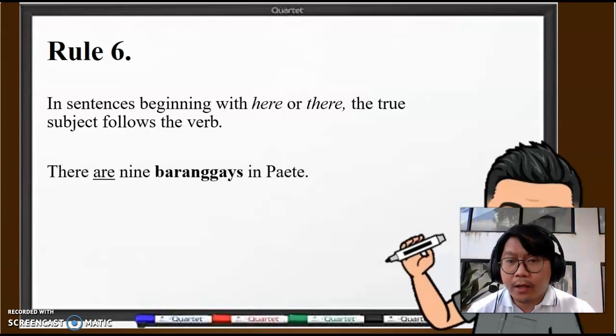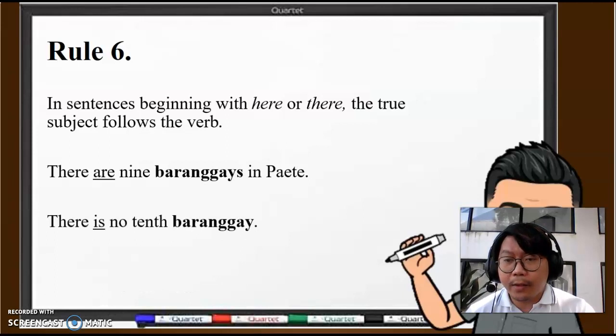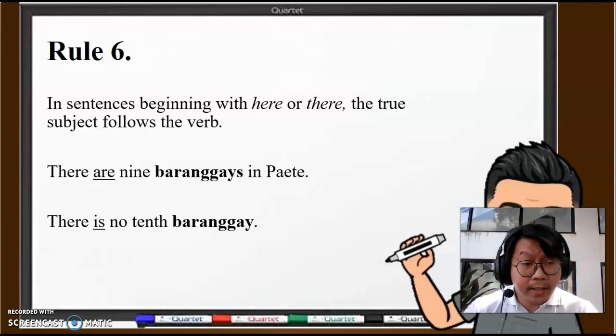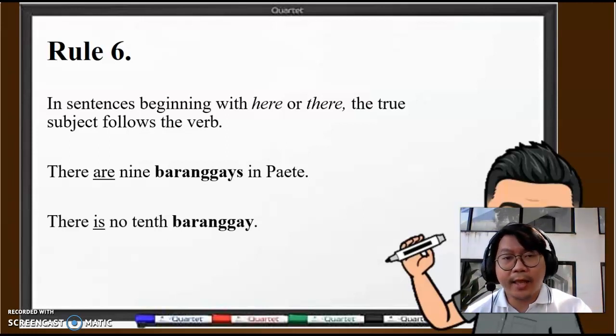Let's have a look at a couple of examples. "There are nine barangays in Pateros." What is the subject here? Not "there." "There" is a dummy subject. So the true subject here is the barangays, nine barangays, so plural, obviously. So we use "are." We cannot say "there is nine barangays in Pateros."